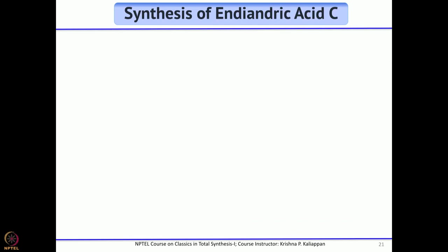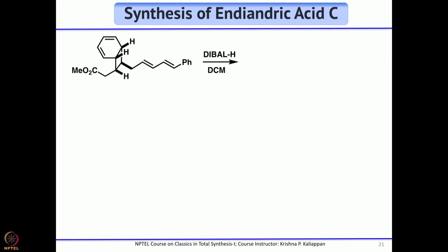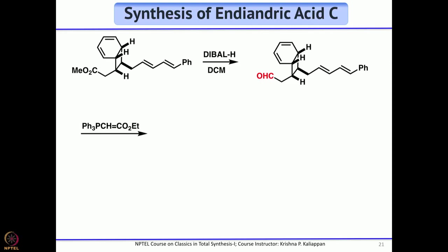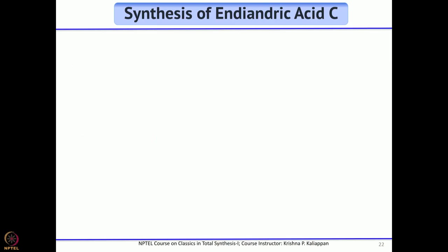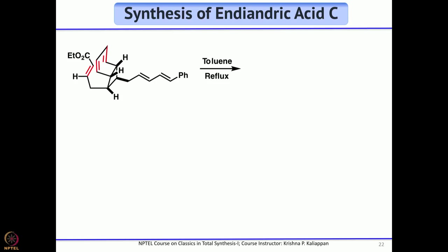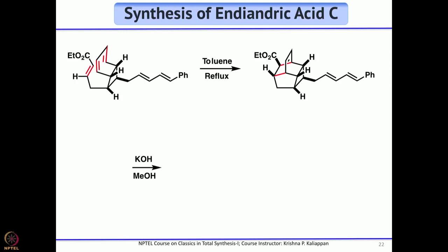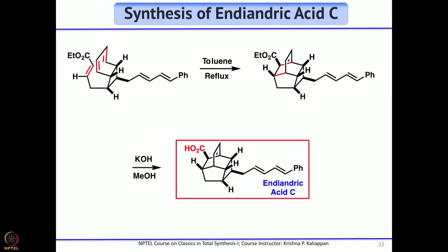For endiandric acid C: reduce the ester with DIBAL to get the aldehyde, do the stabilized Wittig reaction to get the alpha-beta unsaturated ester, then heat in toluene for an intramolecular Diels-Alder reaction to give the alpha-beta unsaturated ester tetracyclic product. Hydrolysis of the ester gives endiandric acid C.